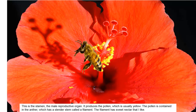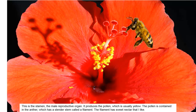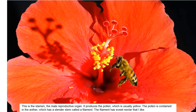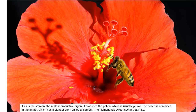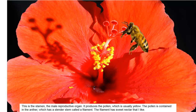This is the stamen, the male reproductive organ. It produces the pollen, which is usually yellow. The pollen is contained in the anther, which has a slender stem called a filament. The filament has sweet nectar that I like.